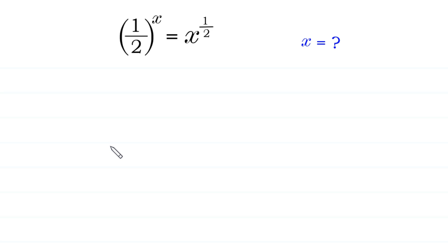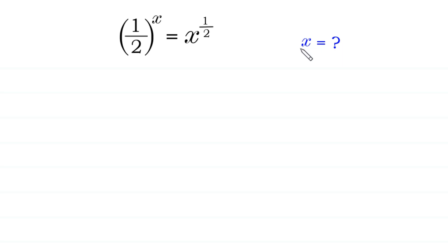Hello, welcome to how to solve this very nice exponential equation. 1 over 2 to the power x is equal to x to the power 1 over 2. We need to find all possible values of x.